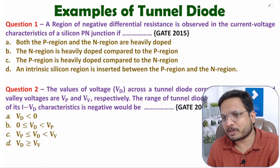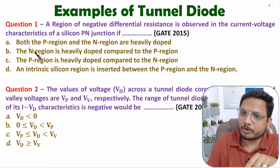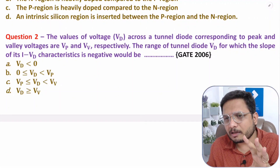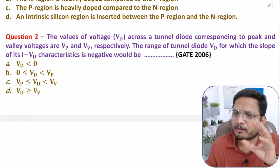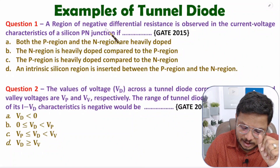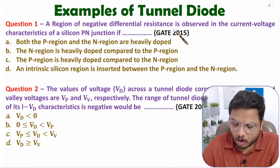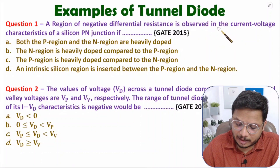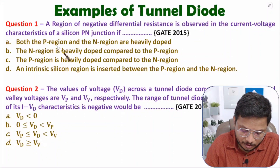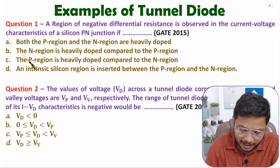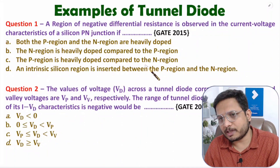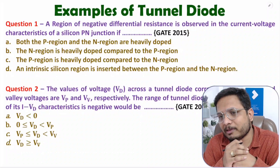Before I start with the solution, I want you to see those questions and try them on your own — later you can check the solution here. This is the first one, let me show it to you. This is the second one, let me show it to you. Now let us solve the first question. What is given: a region of negative differential resistance is observed in current-voltage characteristics of a silicon PN junction. The options are: (a) both P and N regions are heavily doped, (b) the N region is heavily doped compared to P, (c) P is heavily doped compared to N.